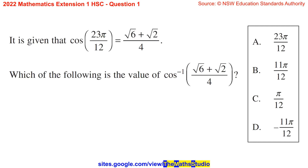Question 1. It is given that cos of 23π over 12 is equal to (√6 + √2) over 4. Which of the following is the value of inverse cos of (√6 + √2) over 4?